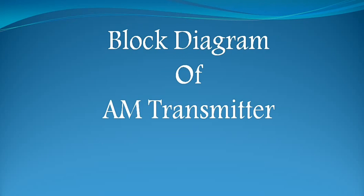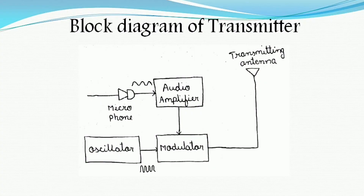In brief, the main blocks involved in the transmitter are: the information source, the audio amplifier, the oscillator, and the modulator. The information source may be either a sound signal, an image signal, or any type of signal. In order to convert the physical form of signal to electrical form, we need a transducer.